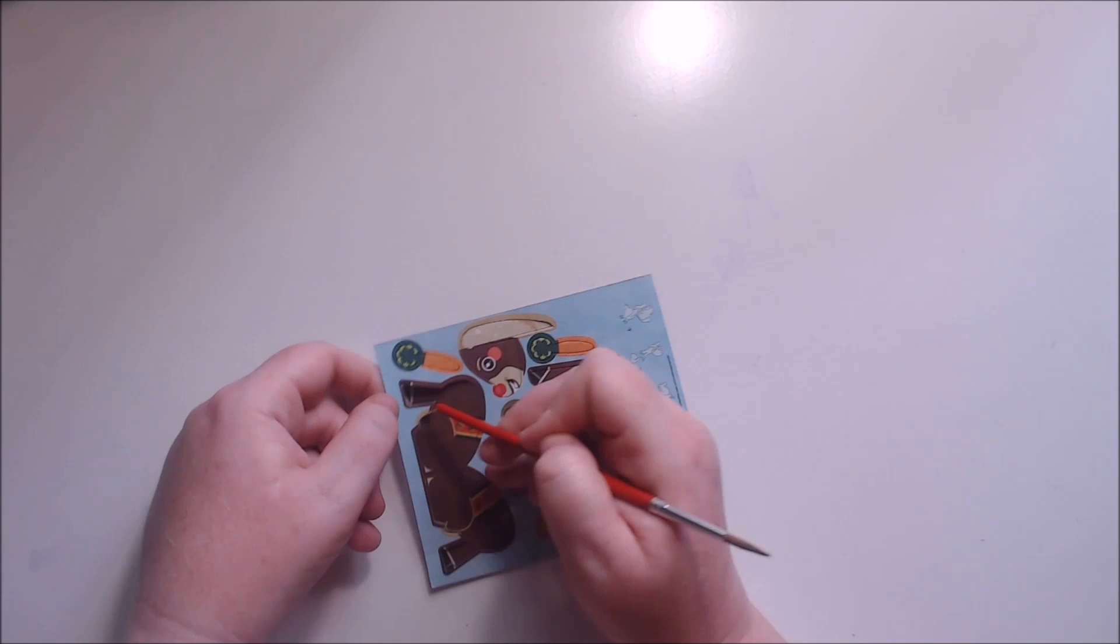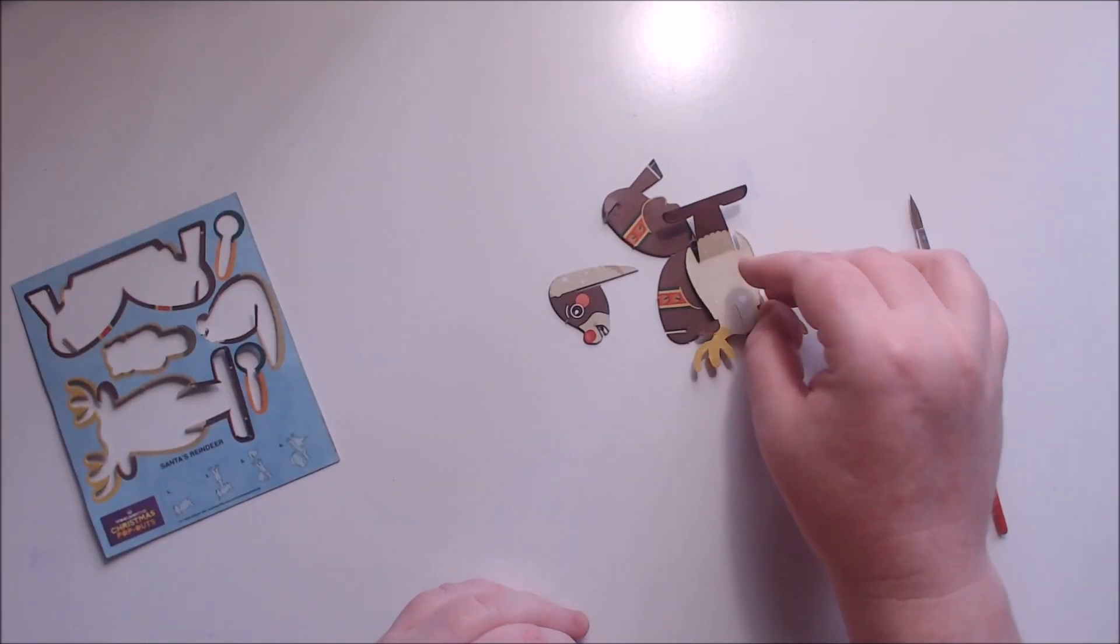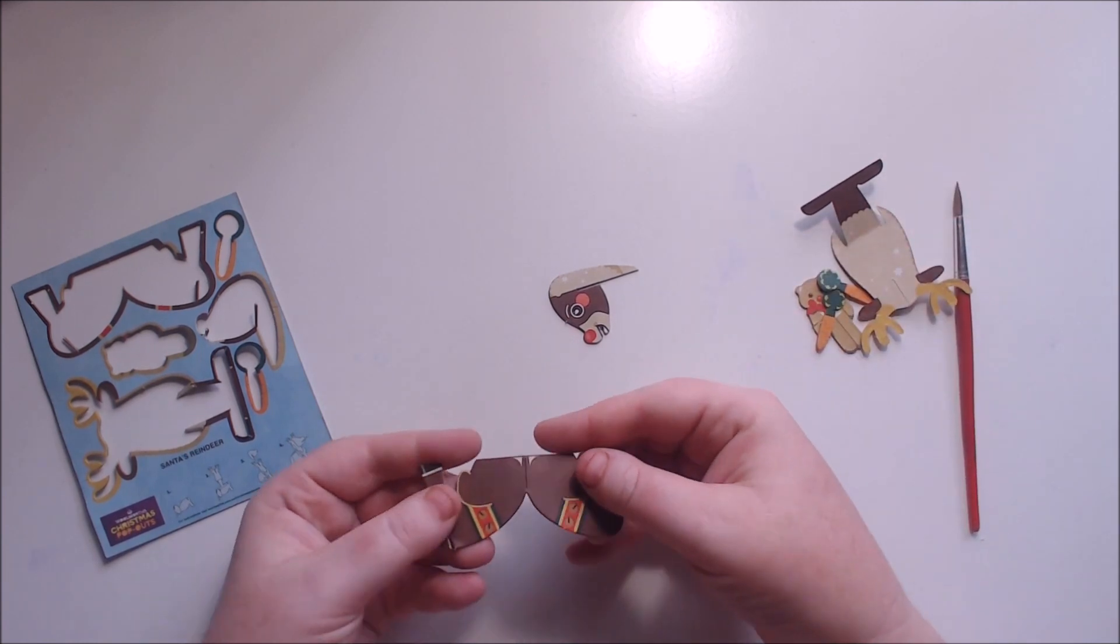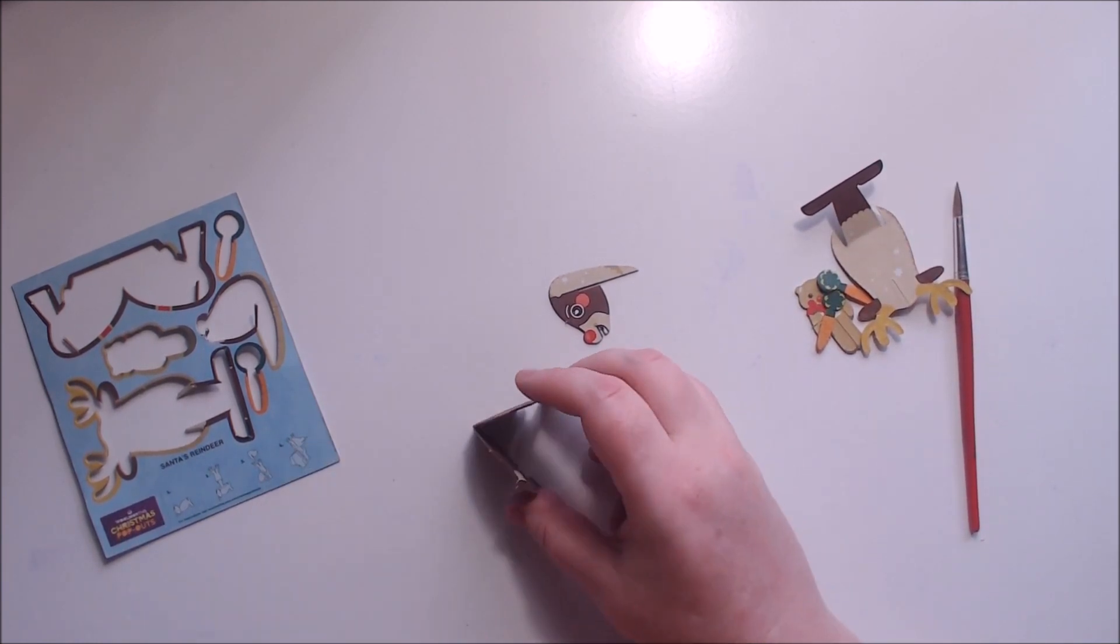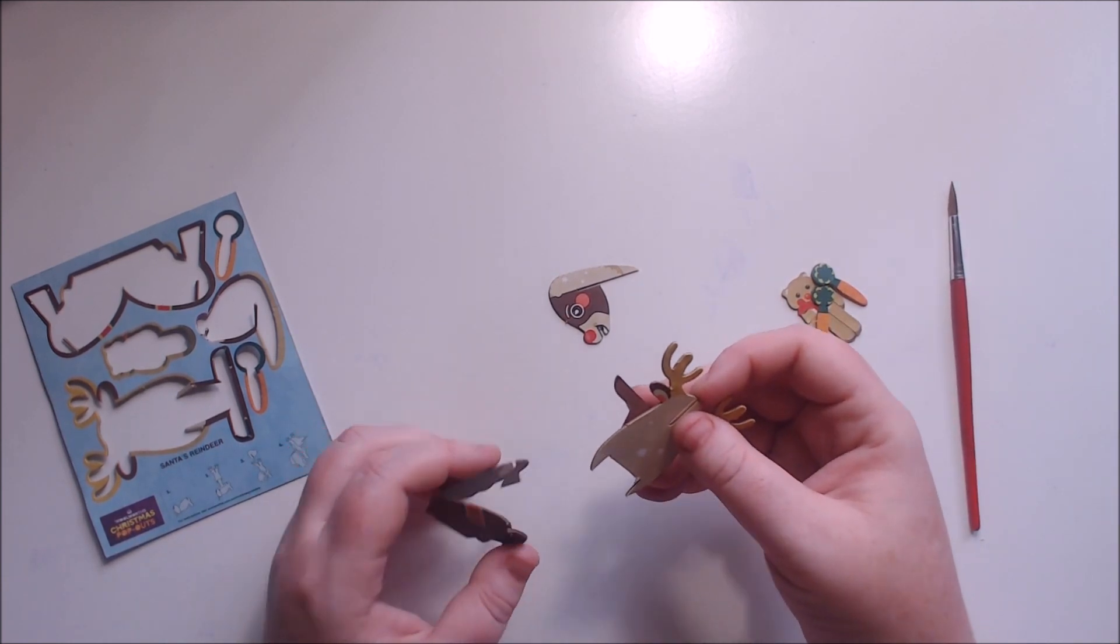All three of these are a little bit tricky, so definitely take your time and study those little instructions. But first things first, you need to take the leg part and make a V with it so that it has the stand for the reindeer.